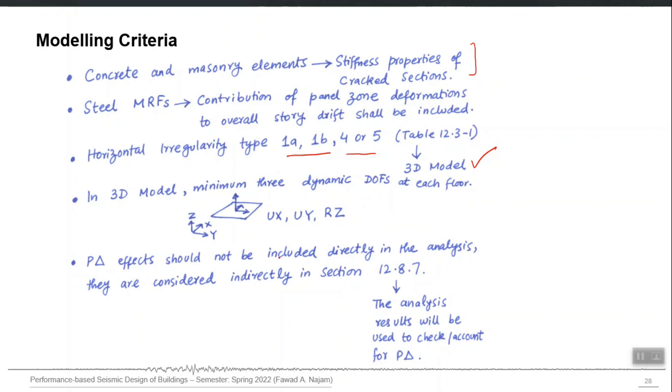P-delta effects should not be included directly in the analysis. They are considered indirectly in section 12.8.7. First, you run the analysis without P-delta and then there is a section which guides us whether there is a need to include P-delta effect or not. You use the results you get without P-delta and then apply that section provision and check whether the amplification by the P-delta effect is required or not.